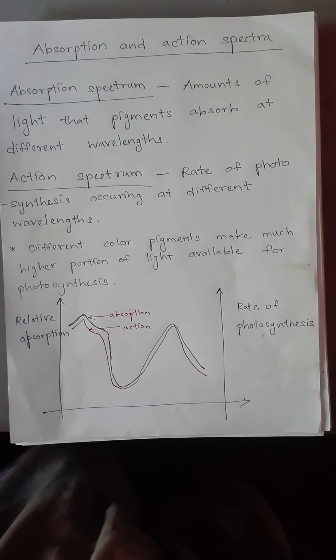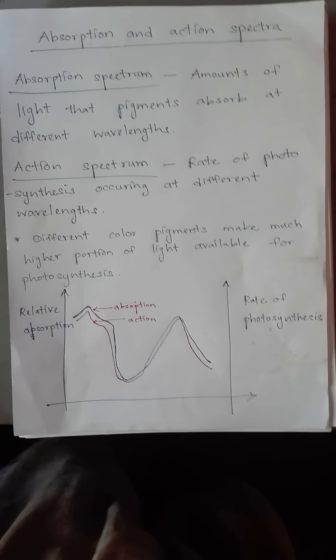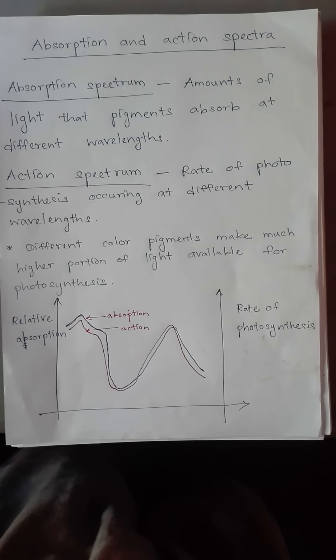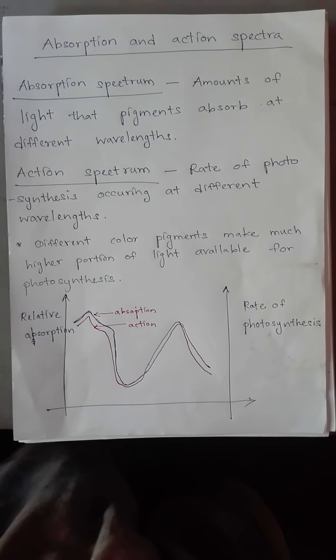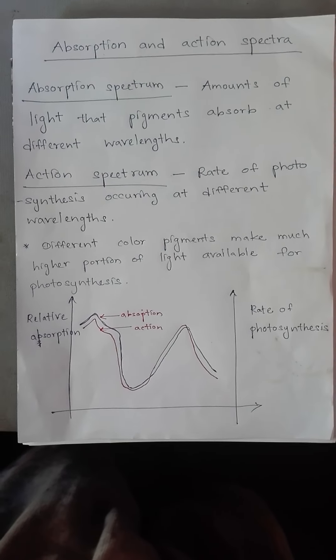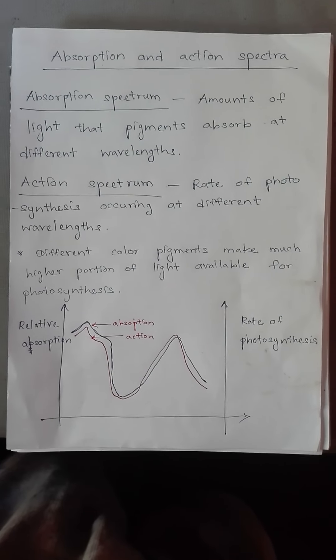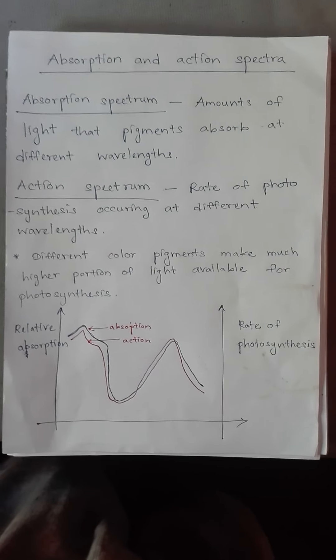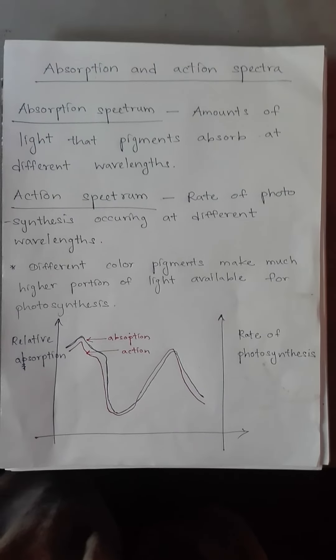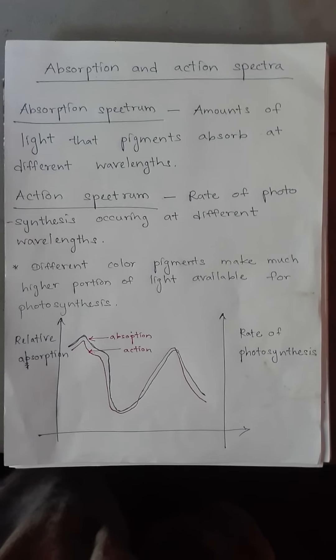The absorption spectrum and the action spectrum, the shape is more or less the same. It means the amount of light absorption is really important for the rate of photosynthesis.